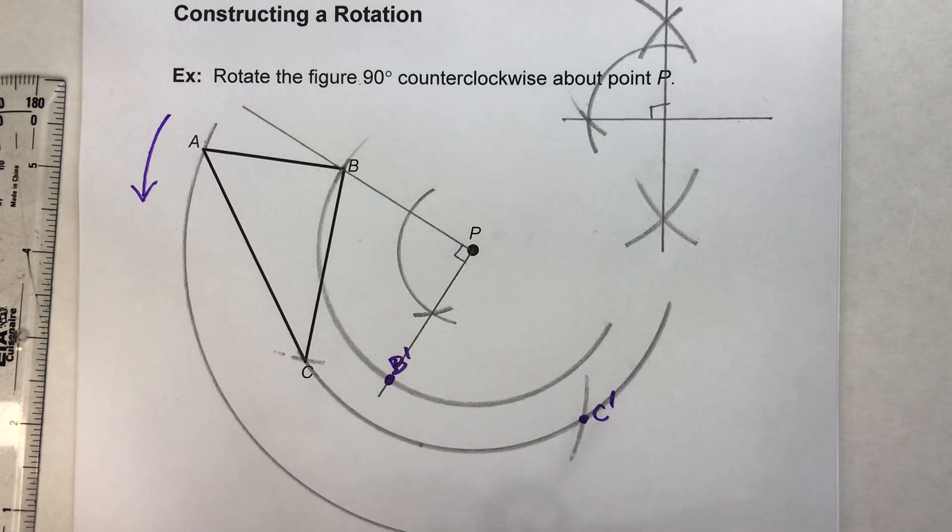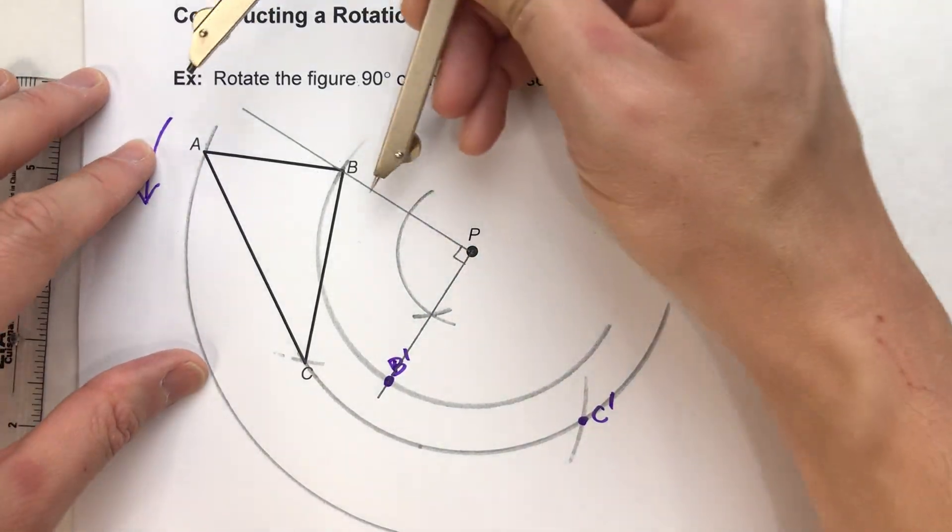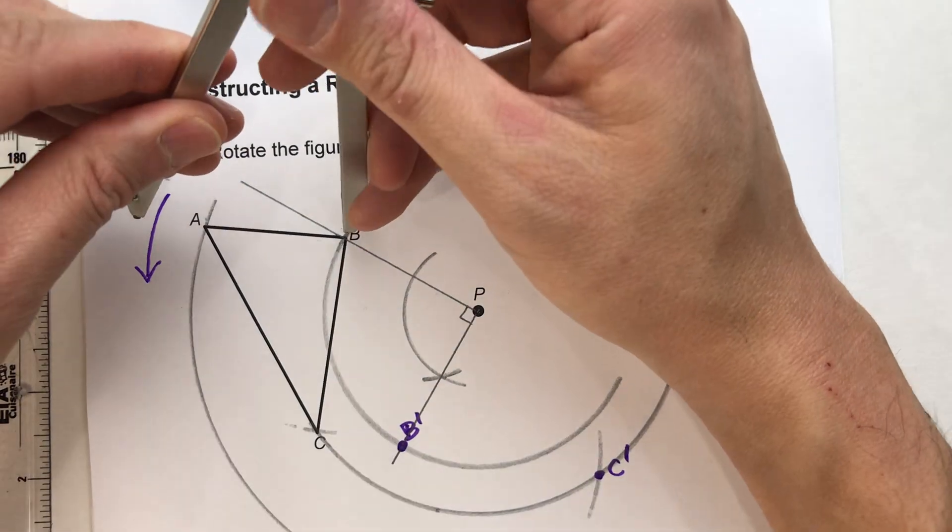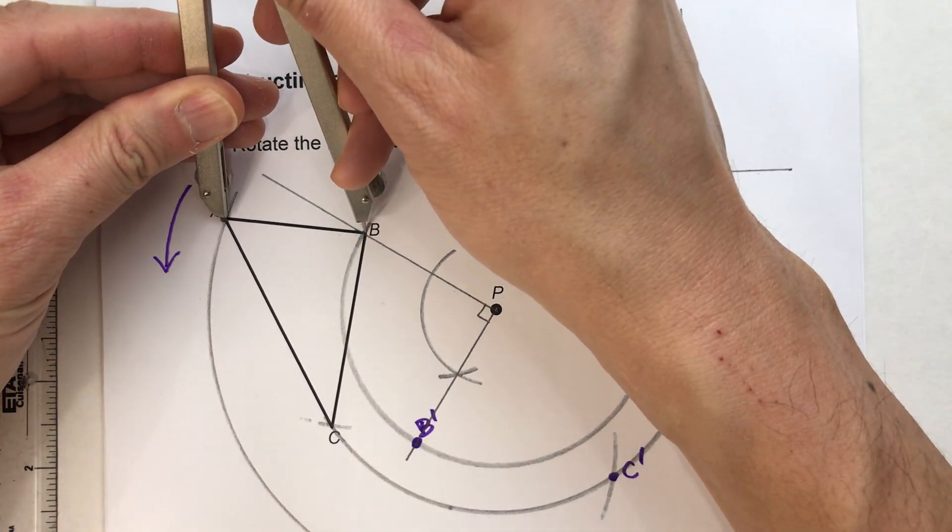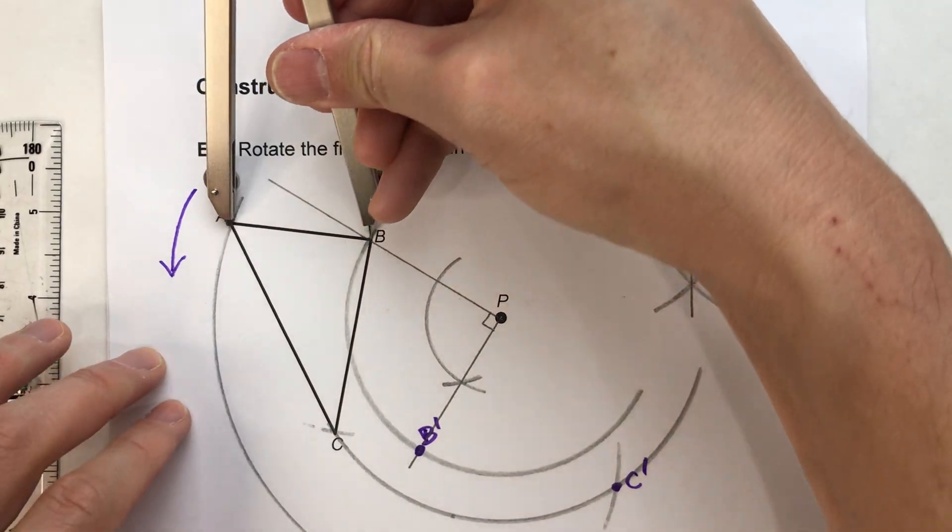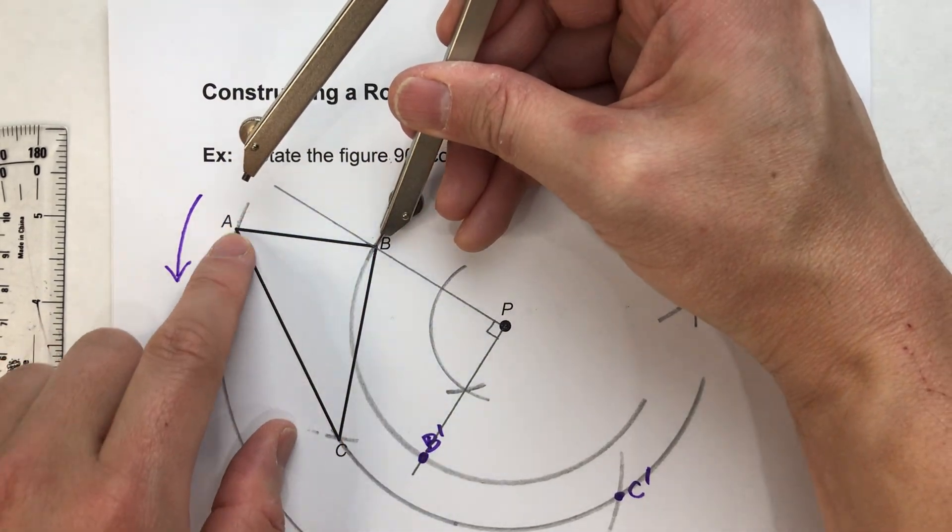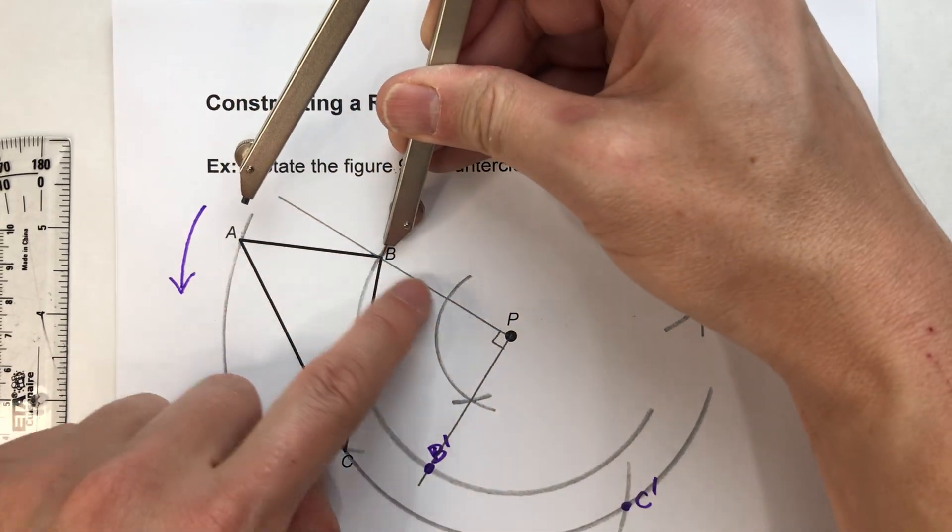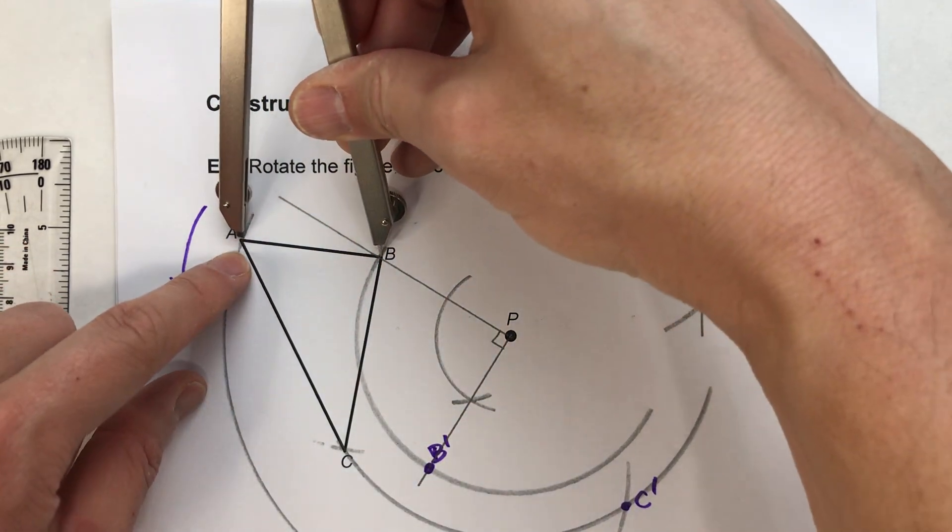Now, similarly, we could do the exact same thing for point A. So here's B. Here's the distance to A. And notice how A is a little bit in front of point B. See here's the line from P to B. So it's a little in front of B.